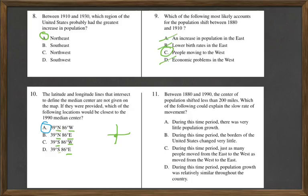And 11, between 1880 and 1990, so that's a big span, the center of population shifted less than 200 miles. Which of the following could explain the slow rate of movement? During this time, there was very little population growth. No, we know just from background that the U.S. grew quite a bit from 1880 to 1990, especially due to immigration and, of course, birth rate. So it can't be A.